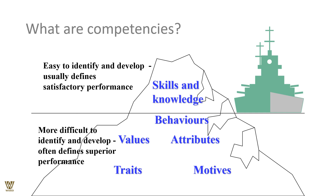Competencies can be thought of as an iceberg. Some are visible — your qualifications, experience, and skills are what show above the surface. But mostly, competencies are deep and difficult to ascertain with the naked eye. The hidden ones include behaviors, outlook toward life, values, motives, attributes, and traits of character. Remember: values, attributes, traits, and motives — all inclusive — are competencies. Knowledge, skills, and abilities or behaviors are more easily distinguishable than the others.